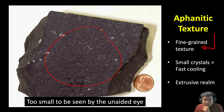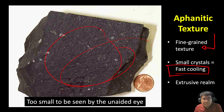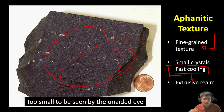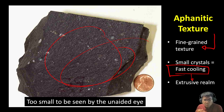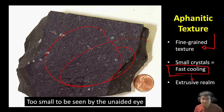The small crystals of minerals within these rocks occur due to fast cooling, and fast cooling happens in the extrusive realm. The lava flow you saw in the previous picture cools very fast. Fast cooling does not allow minerals to grow big, and that is why the result is fine-grained extrusive igneous rocks, just like this rock right here. This rock is called basalt.